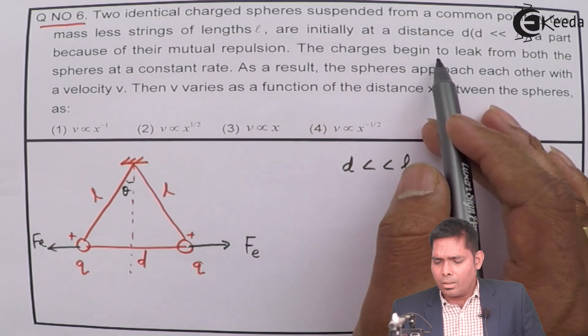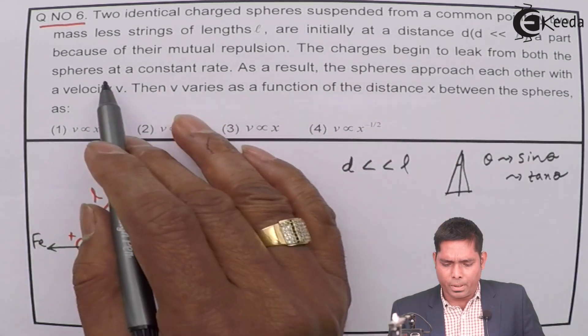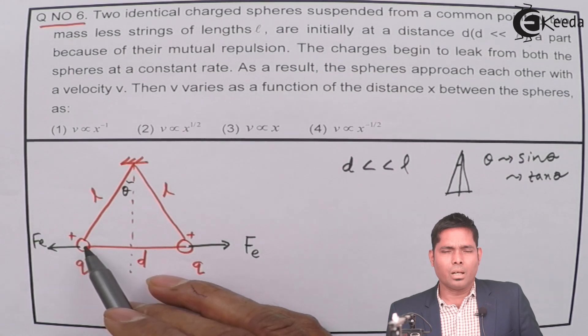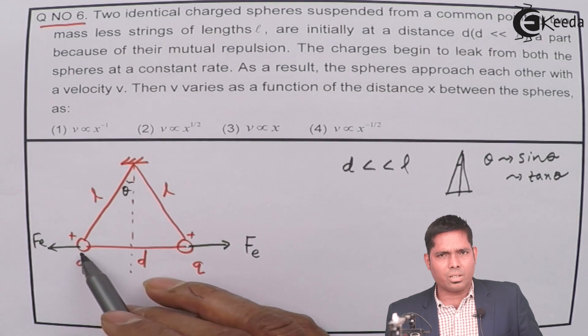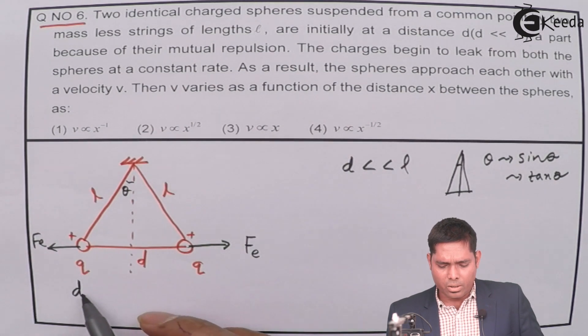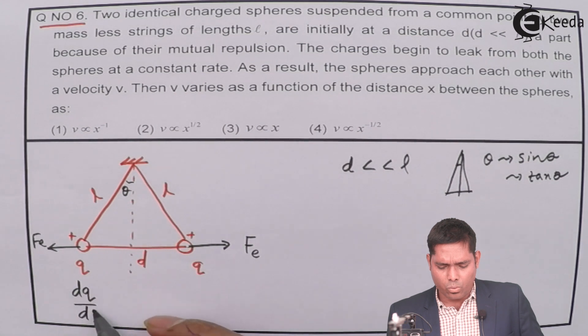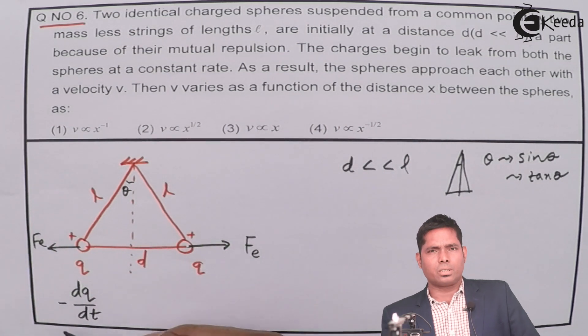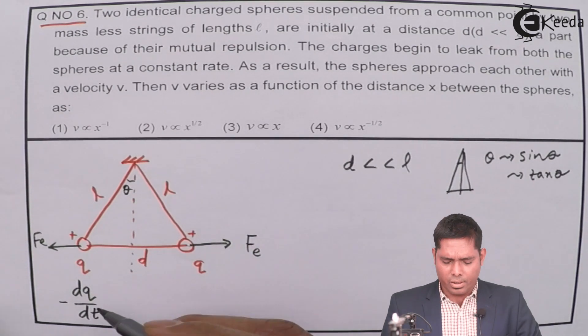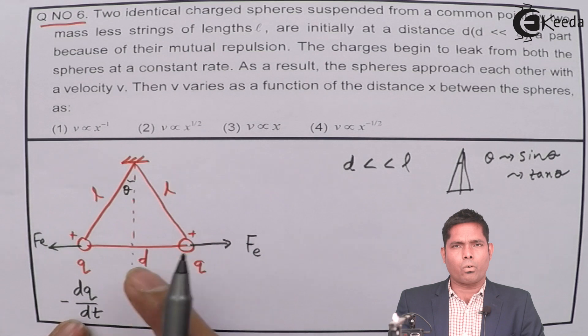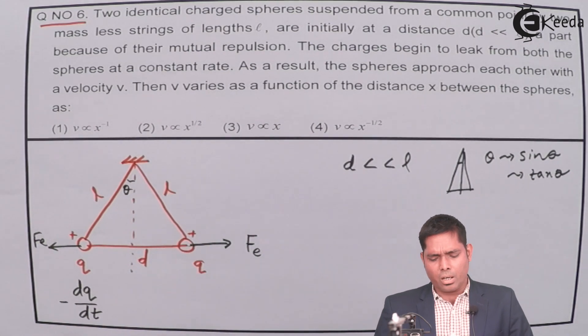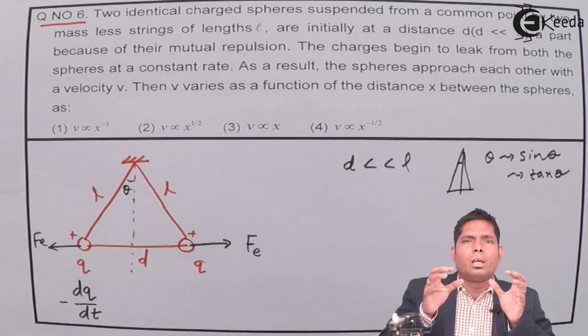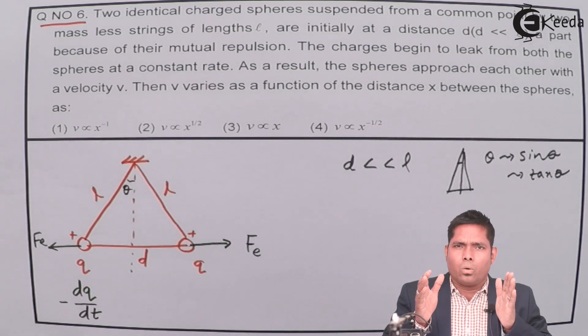The charges begin to leak from both the spheres at a constant rate. Now, the charge that is accumulating here starts decreasing at a constant rate. If the charge starts decreasing at a constant rate, suppose that the rate of decrease of charge is dQ/dt. This is the rate at which the charge will decrease. So I can consider negative because it is decreasing. And this rate is same for both the spheres. And as the charge will come out of the sphere, it is very clear that the net charge will decrease and they will now come closer.